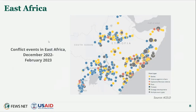Another key hazard playing into the current food security situation is conflict. The map shows conflict events in East Africa from December 2022 through February 2023, according to ACLED data. In Somalia, there has been an increase in conflict particularly in the south and central of the country in recent months. In Ethiopia, conflict continues in Oromia, SNNPR, Somali, and Afar regions, disrupting livelihoods in both countries. An exception is Tigray, where conflict levels have been minimal since the signing of the peace agreement. Conflict in DRC is also driving displacement to neighboring Uganda, Burundi, and Rwanda.